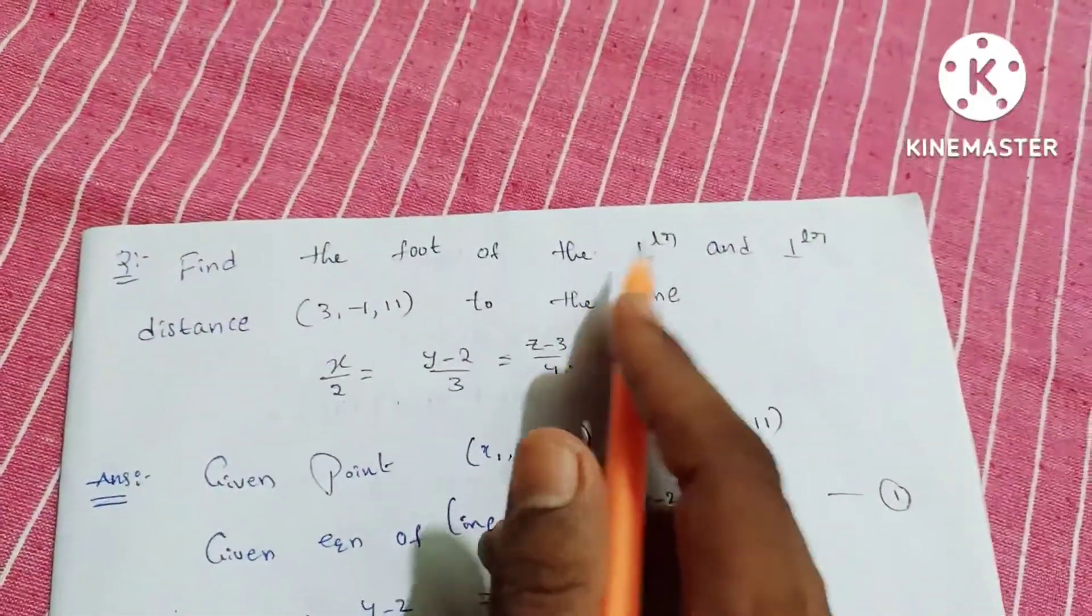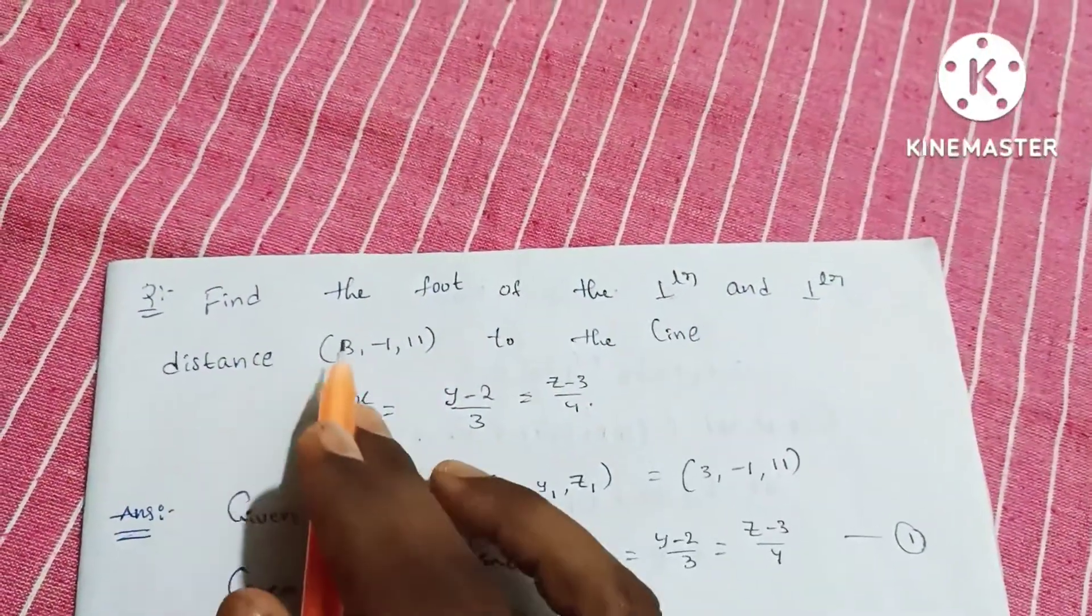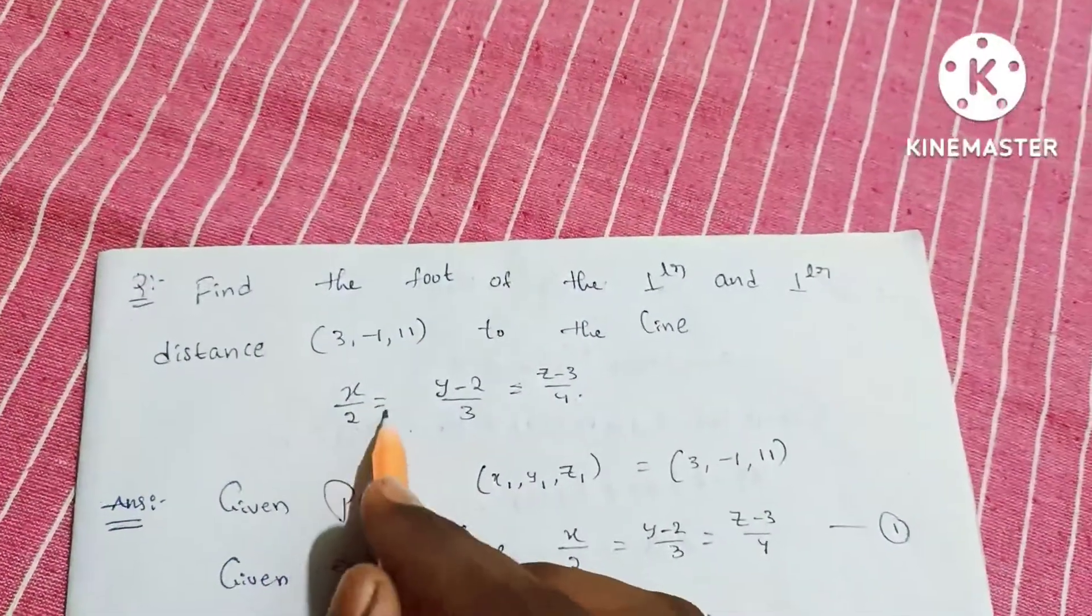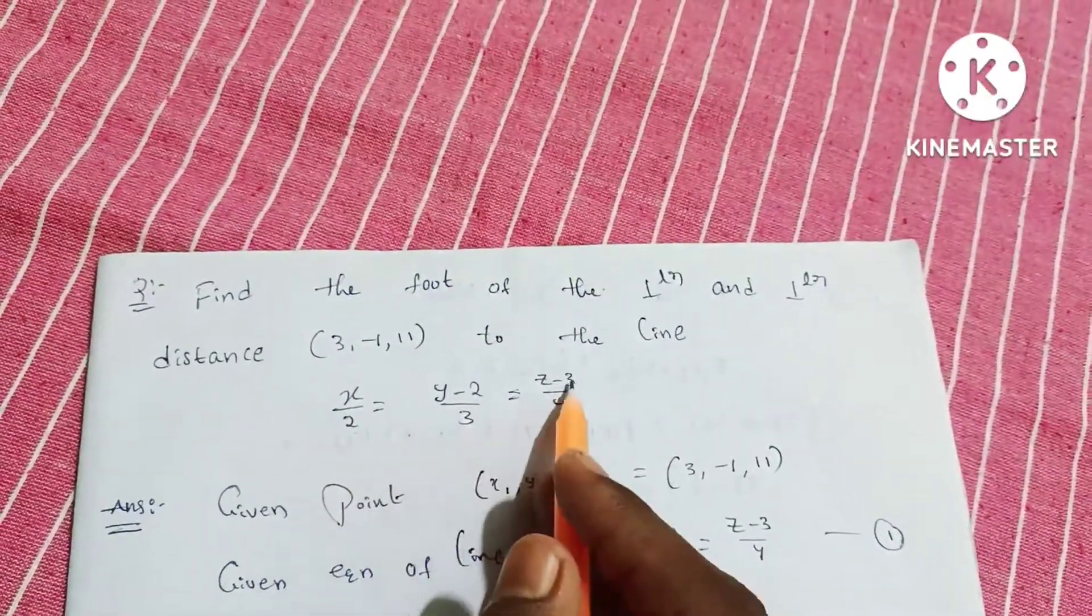Find the foot of the perpendicular and perpendicular distance from (3, -1, 11) to the line x/2 = (y-2)/3 = (z-3)/4.